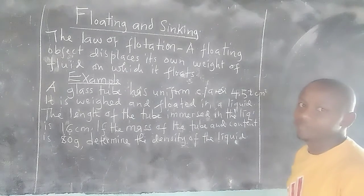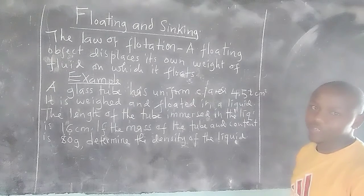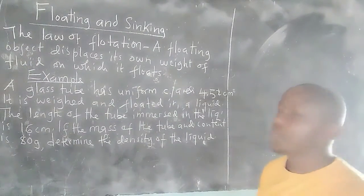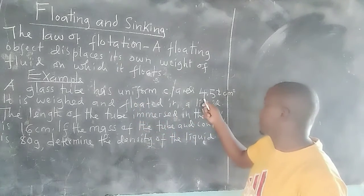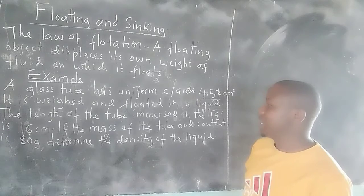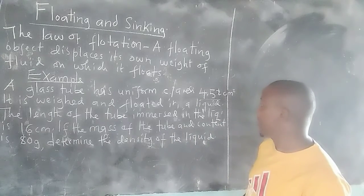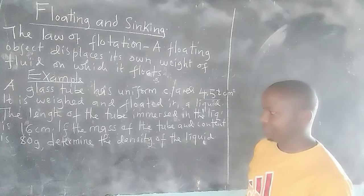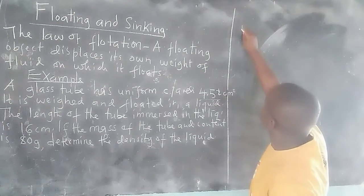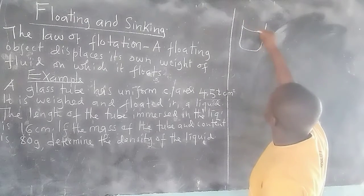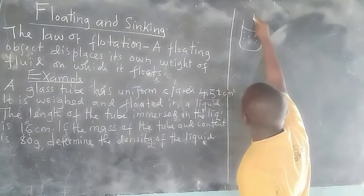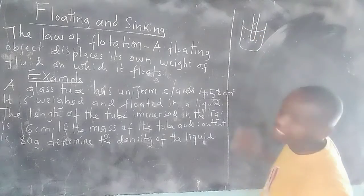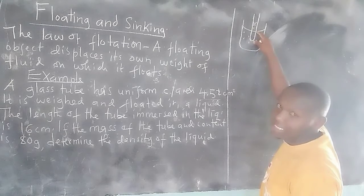It is very important that we analyze this question and solve it the way it should be solved. We are given a glass tube whose uniform cross-section area is 4.52 cm², and it is weighted and floated in a liquid, such that the part of the glass tube which is 16 centimetres is sunk inside.